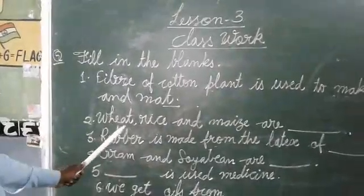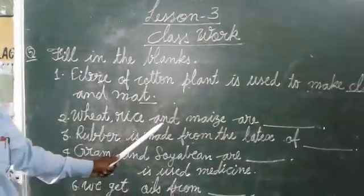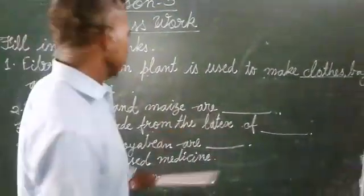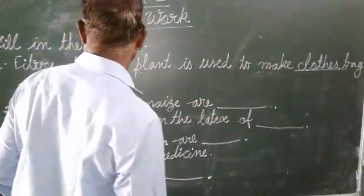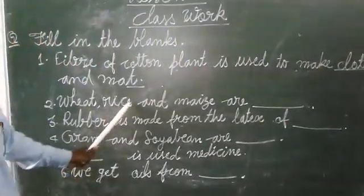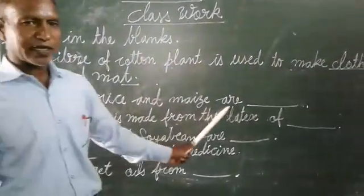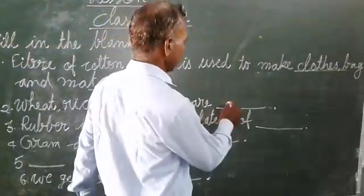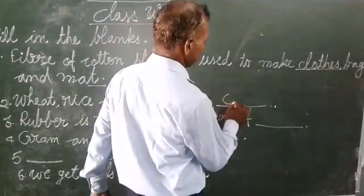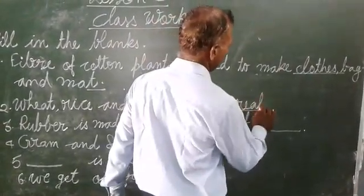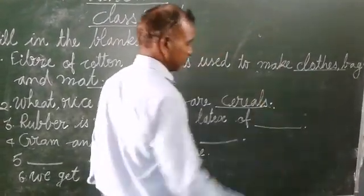Next: wheat, rice, and maize are cereals. Gehun, chabar, and makkah — what are these called? Cereals. C-E-R-E-A-L-S.